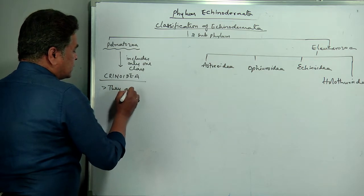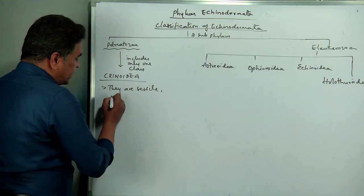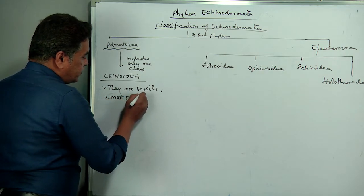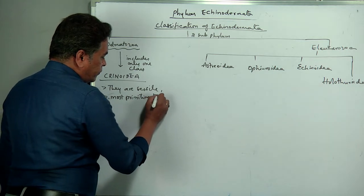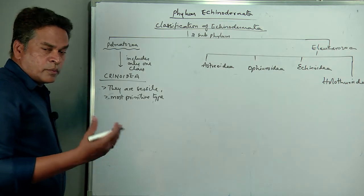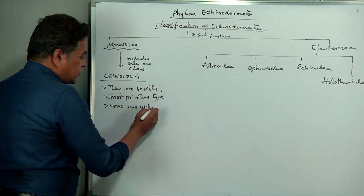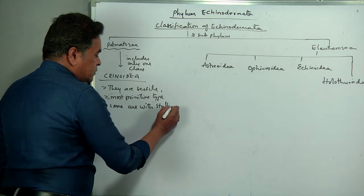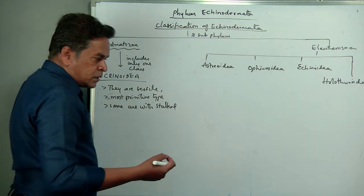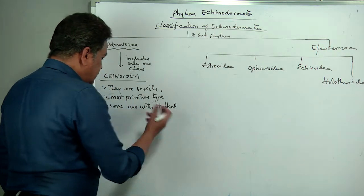General characters of Crinoidea: they are sessile and most primitive type. Sessile means they will not show movement. Some are with a stalk — their body has a structure by which they are sessile and get attached to the substratum. Some are with a stalk and some are without a stalk.